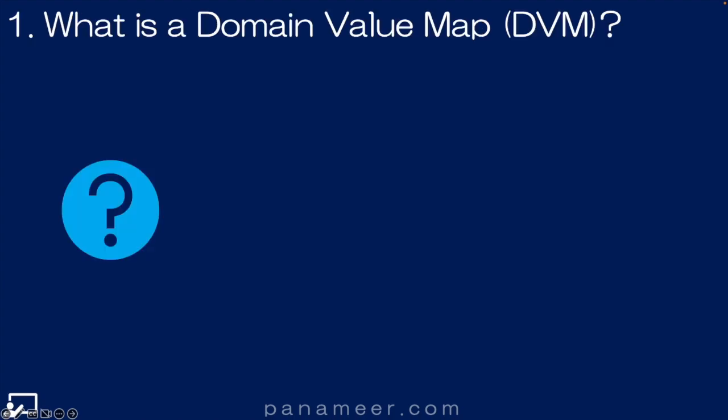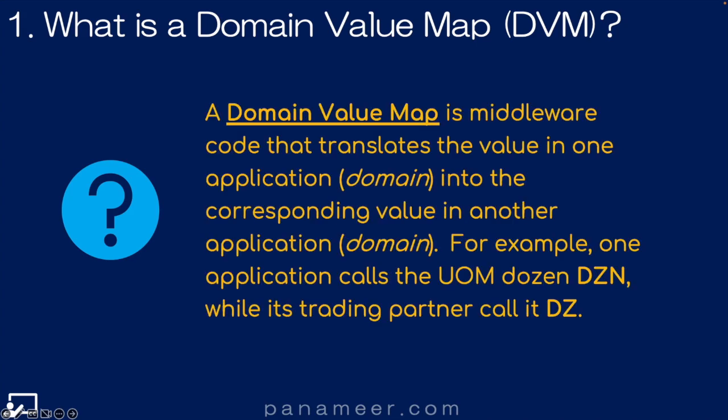What is a Domain Value Map or DVM? A Domain Value Map is middleware code that translates a value in one application or domain into a corresponding value in another application or domain. For example, one application calls the UOM DZN while its trading partner calls it DZ. When I explain this to our customers, I use potato and potato.